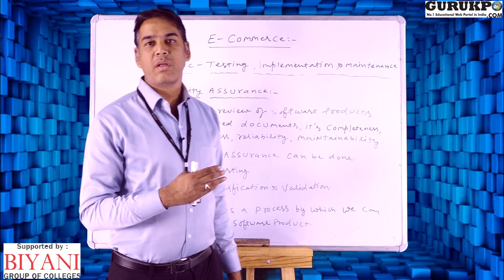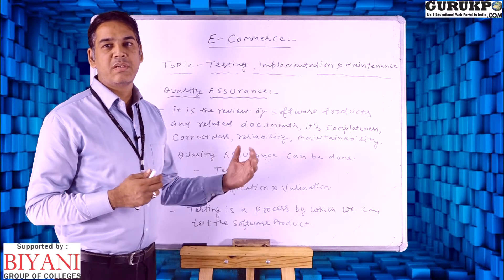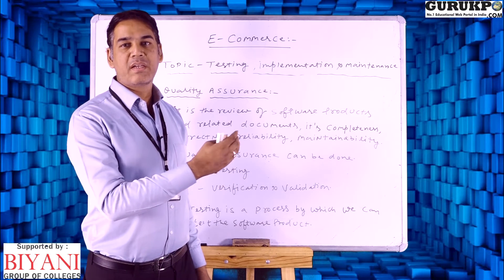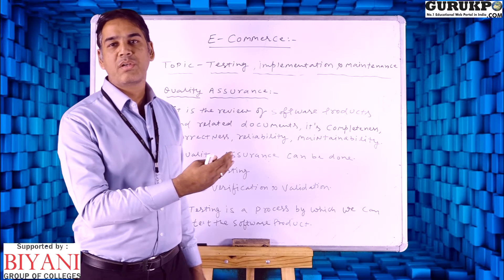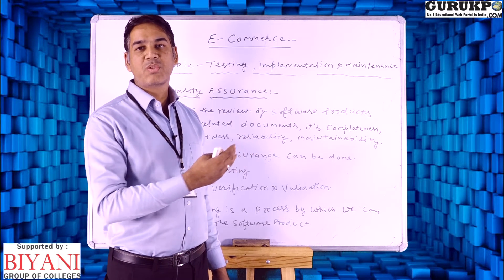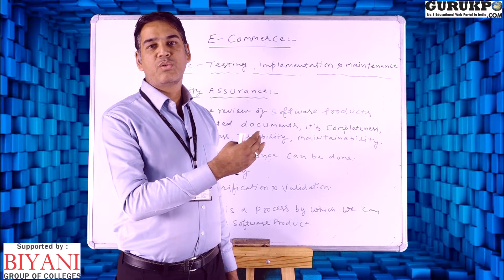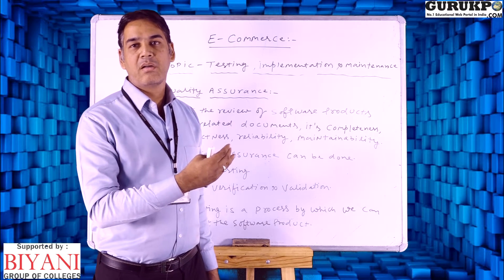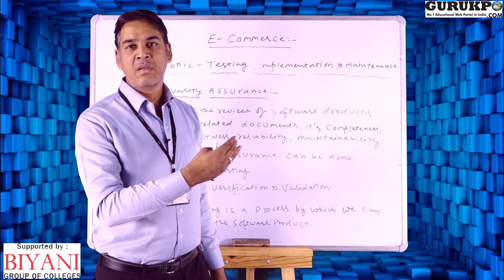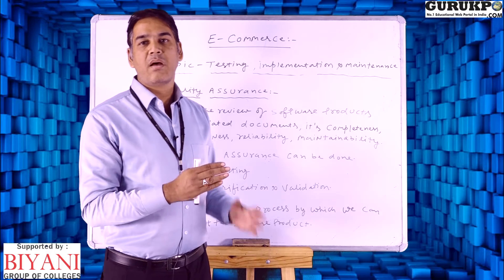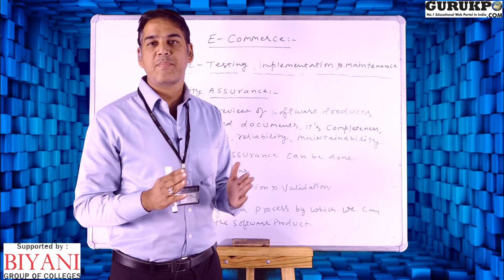The first phase is called requirement gathering. The client or software company gathers the required information they need to develop a software product. The second thing after gathering information is the analysis part. Then we go to the third part, which is called the designing part — how we can design a product, a software, or a page.